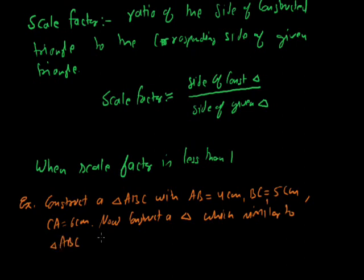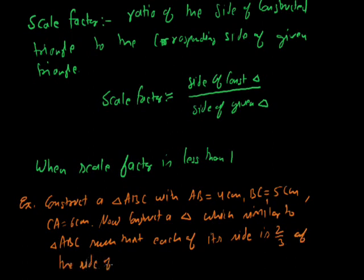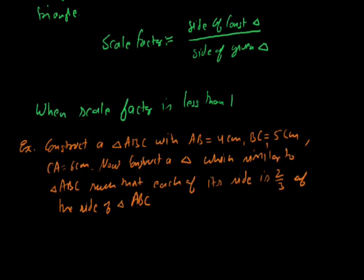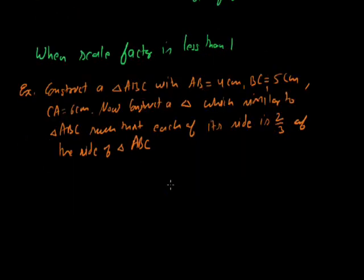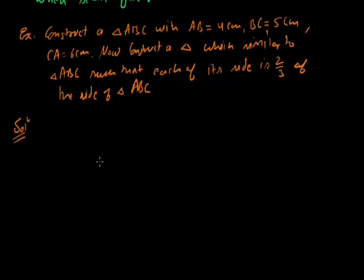Construct a triangle similar to triangle ABC such that each of its sides is two-thirds of the sides of triangle ABC. The given sides are 4 cm, 5 cm, and 6 cm. First, we construct triangle ABC — let's say this is AB line, that is 4 cm.